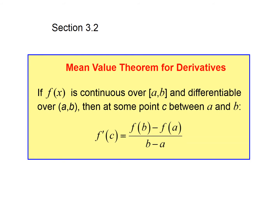The Mean Value Theorem for derivatives states that somewhere on the interval — first, the function has to be both continuous and differentiable over AB, where AB is an open interval. If that is true, then someplace the derivative has to equal the average rate of change. So if the function is continuous and differentiable over an open interval, then someplace on that interval, the derivative is equal to the average rate of change.